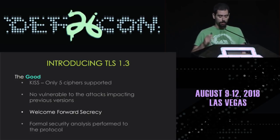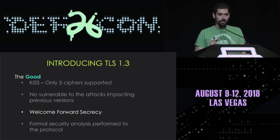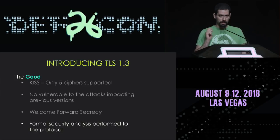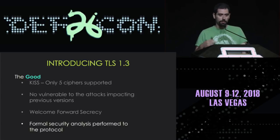TLS 1.3 also supports perfect forward secrecy by default — it's not optional like in previous versions. To recap: imagine an attacker stores all your secure communications. Perfect forward secrecy ensures that even if the attacker managed to steal the server's private keys, they wouldn't be able to decrypt those communications because ephemeral session keys were used. Additionally, TLS 1.3 went through formal security analysis — the protocol specification, its machine state, and security assumptions were analyzed, weaknesses were identified, and the protocol was refined before its final release.